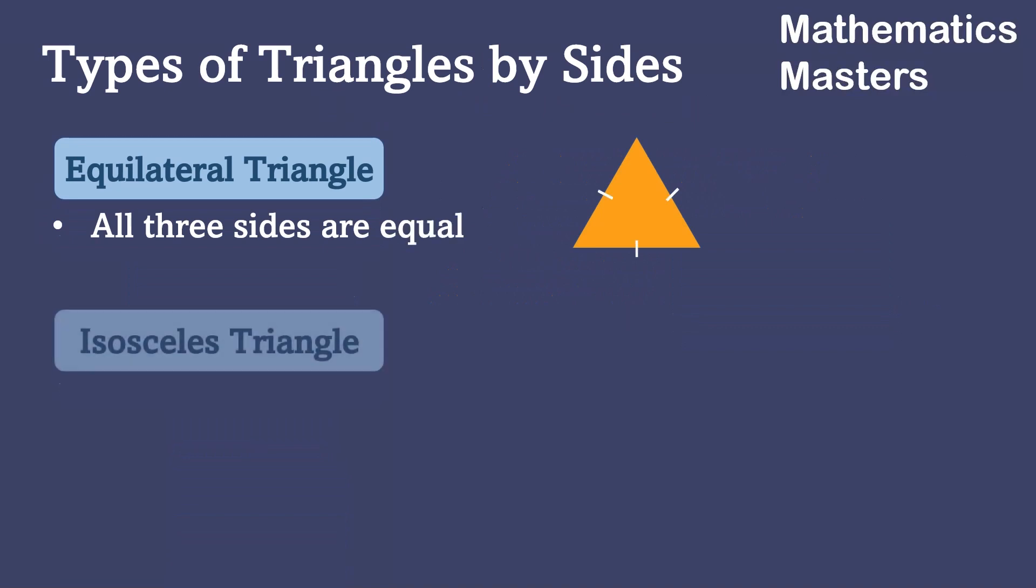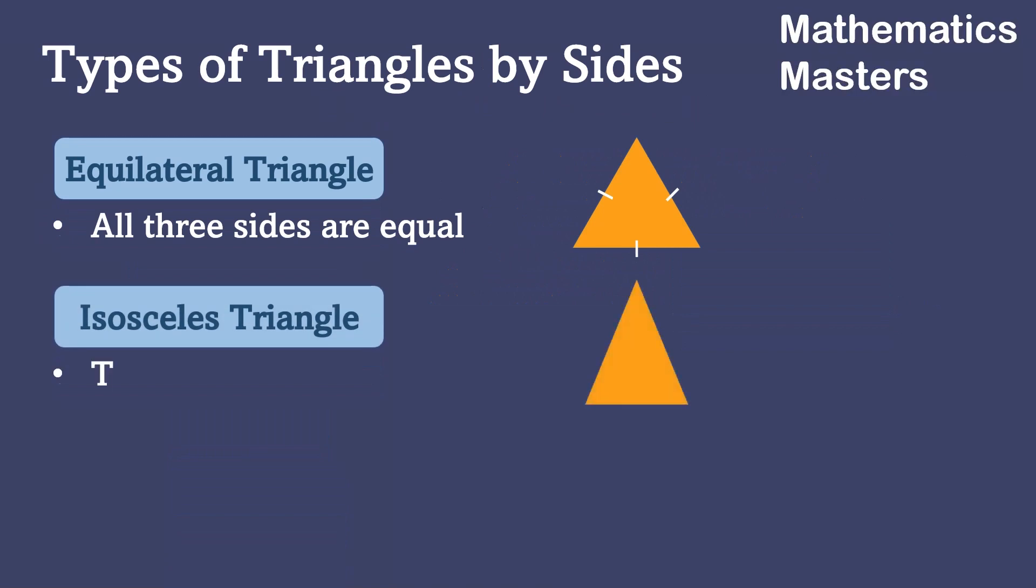The second one is the isosceles triangle. In isosceles triangle, there are only two sides which are equal.